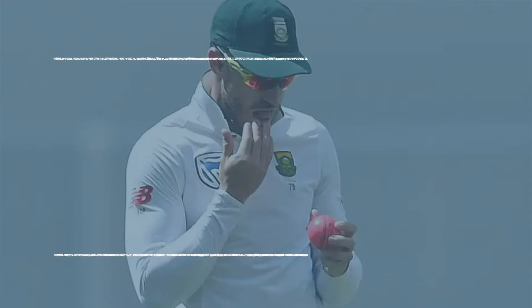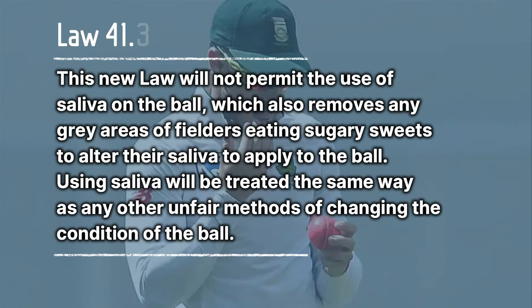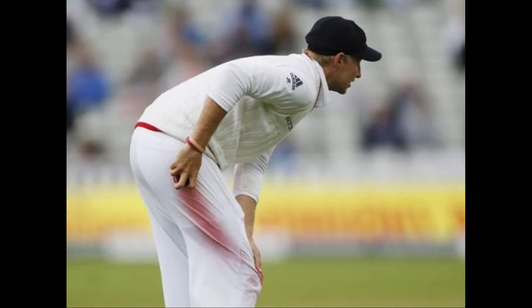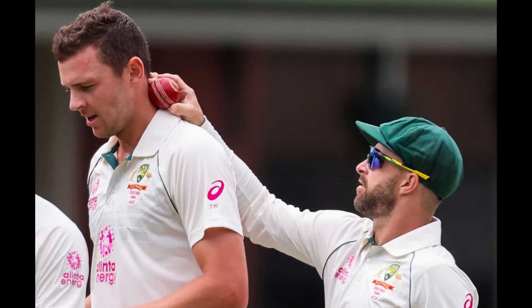Law 41.3: No Saliva. This law will not permit the use of saliva on the ball, which also removes any grey areas of fielders eating sugary sweets to alter their saliva before applying it to the ball. Using saliva will be treated the same way as any other unfair methods of changing the condition of the ball. Shining the ball is important from the bowler's perspective, but using saliva is strictly prohibited. This also eliminates chances of players chewing gum to thicken saliva. However, players can use their sweat to shine the ball, and this rule will be included in this year's IPL season.